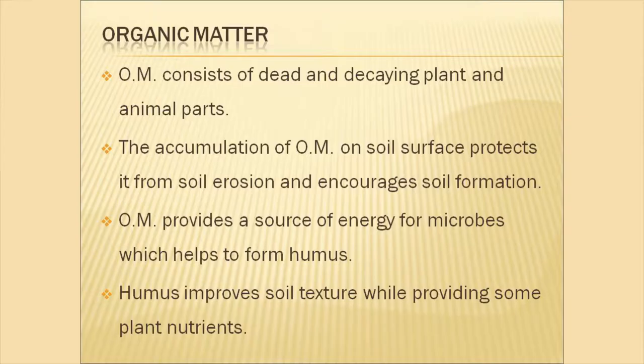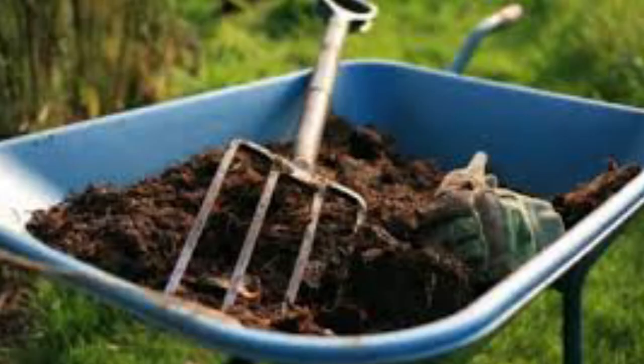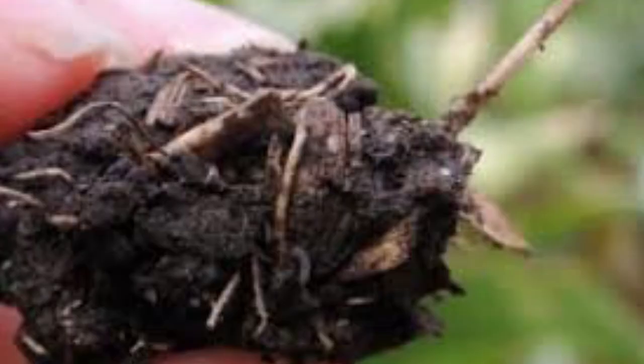Now let us look at organic matter and its importance to soil development. Organic matter, referred to as OM, consists of dead and decaying plant and animal parts. A good source of organic matter can come from kitchen sources, crops, or poultry manure on the farm. Another good source is the remains of plant material harvested from crops — referred to as green manure — which can be plowed directly back into the soil for earthworms to benefit from.